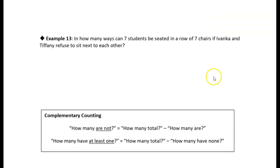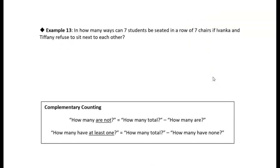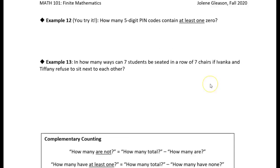In fact, I have a little box down here. Whenever you see 'how many are not' or 'how many have at least one,' you should think complementary counting. That's kind of a clue. At least one—think complementary counting. That should be a trigger word for you.